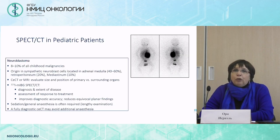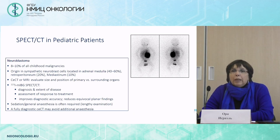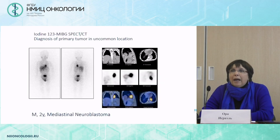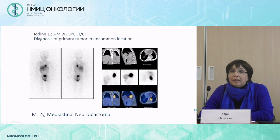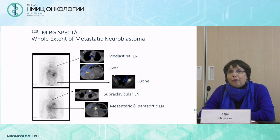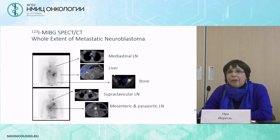In pediatric patients, neuroblastoma is perhaps the most common solid tumor. Iodine-123 MIBG is successfully used — in some cases the diagnosis is clear even from planar images, but in others it is more difficult, such as a patient with a mediastinal neuroblastoma. In another patient, SPECT-CT allowed us to define the full extent of metastatic involvement: mediastinal lymph nodes, the liver, the bone, and additional lymph nodes above and below the diaphragm.